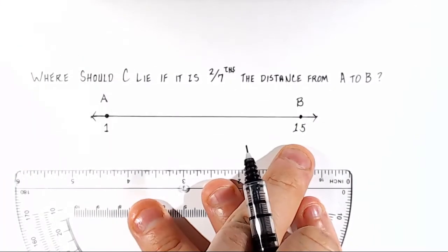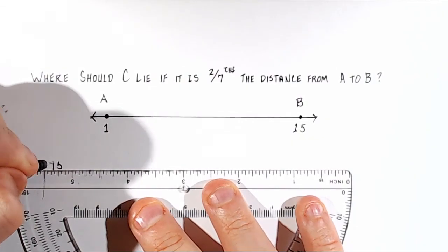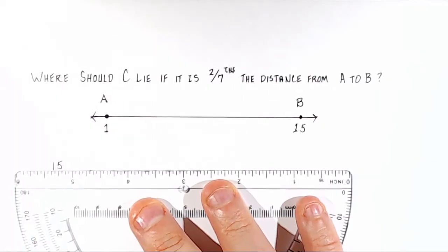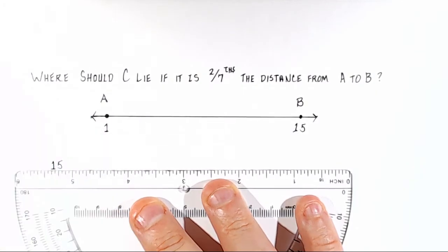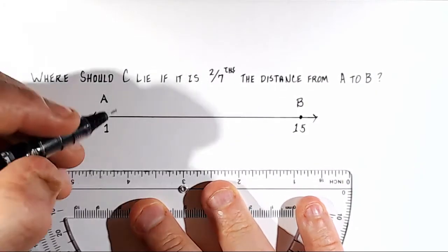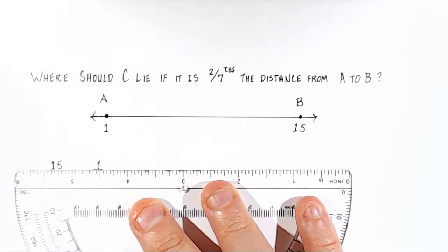You start with point B. Point B is at 15, and point A is at 1. So you just write it just like that.